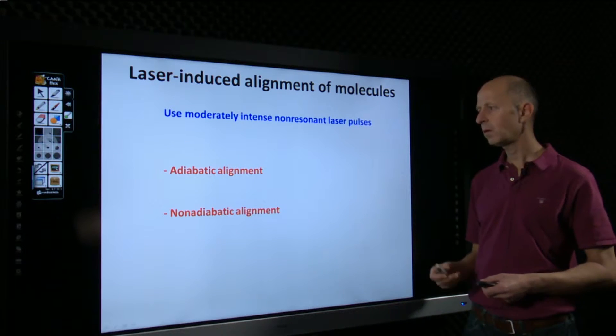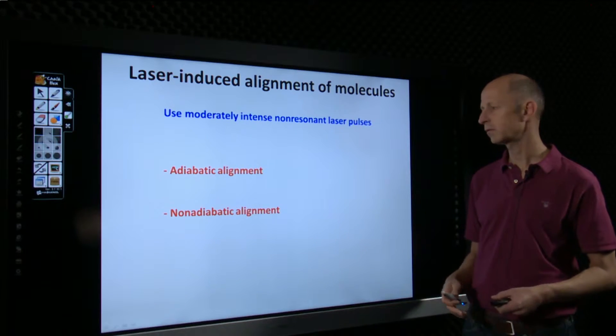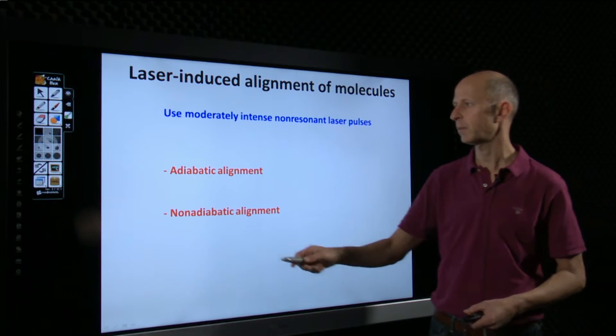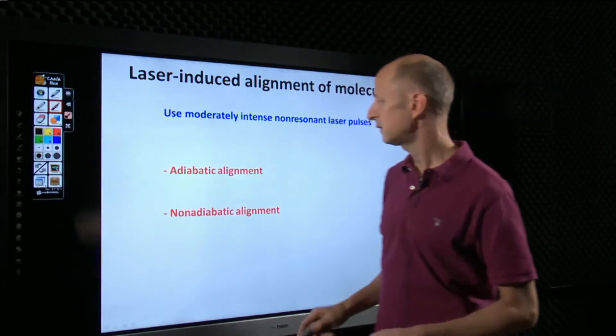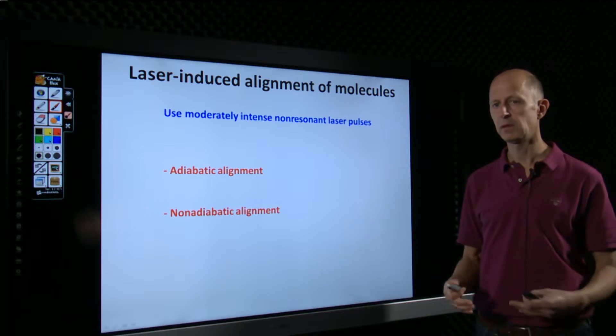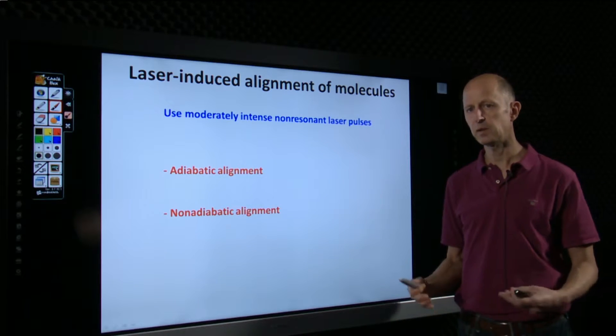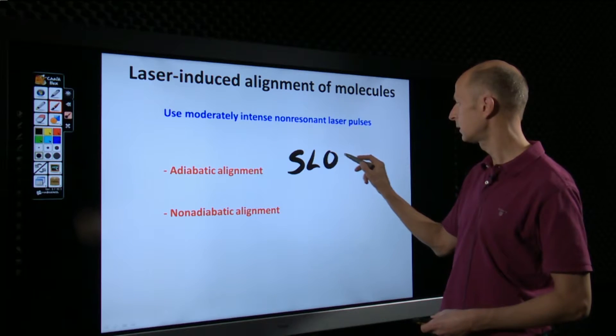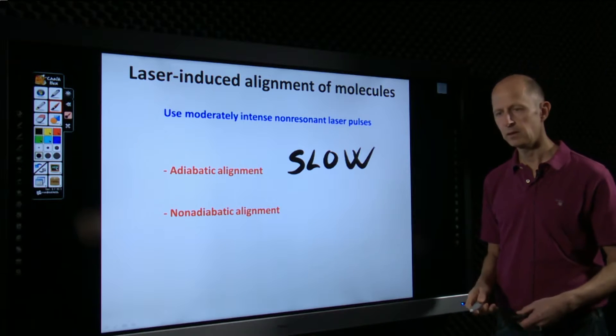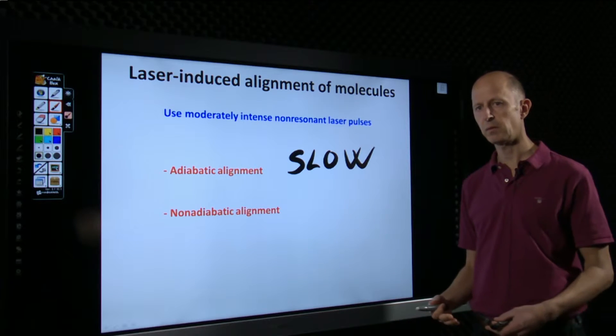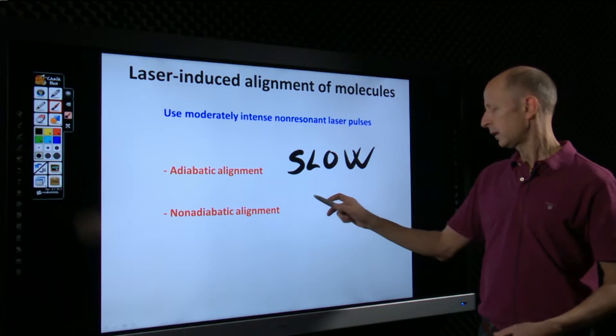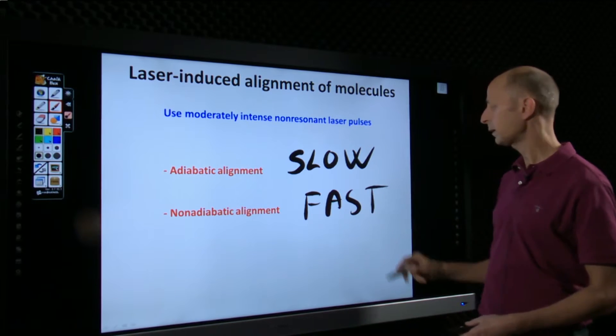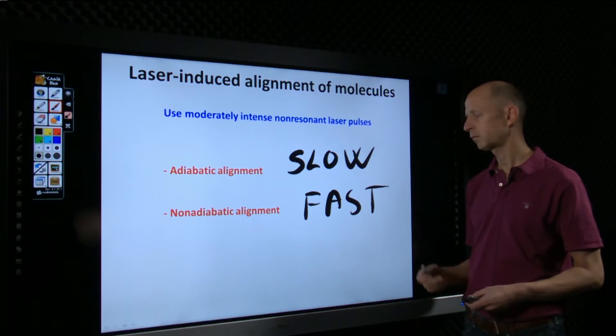In practice, all alignment schemes fall or can be categorized into two overall categories. One is called adiabatic alignment and the other is called non-adiabatic alignment. And this has to do with how the laser field is turned on with respect to the characteristic time scale, namely the rotation time scale. So, adiabatic alignment basically implies that you turn on the laser field slowly compared to the inherent rotation period of the molecule. Likewise, non-adiabatic alignment implies that you turn on the laser field rapidly or fast with respect to the rotation period of the molecule.